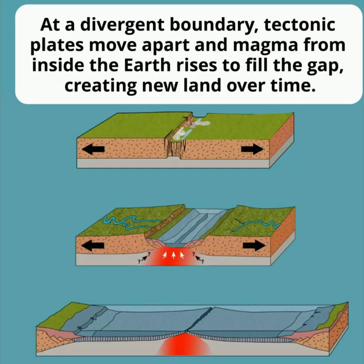In a divergent boundary, two tectonic plates slowly move in opposite directions, and as they pull apart, the space between them is filled by material from deep inside the Earth, which helps shape new land over time.